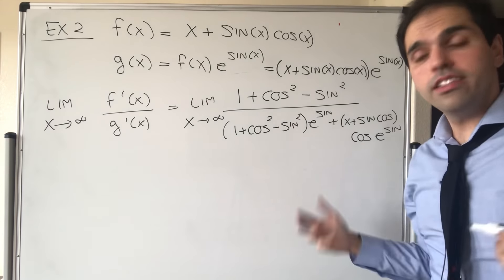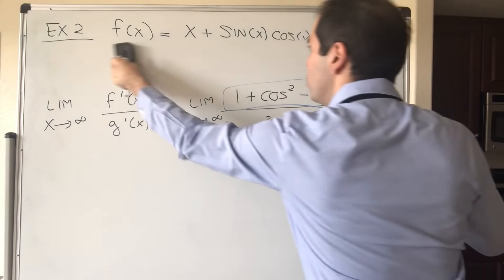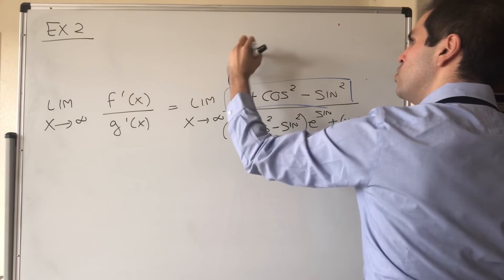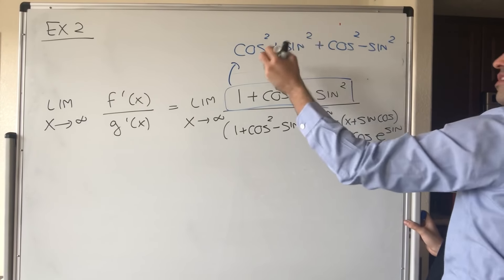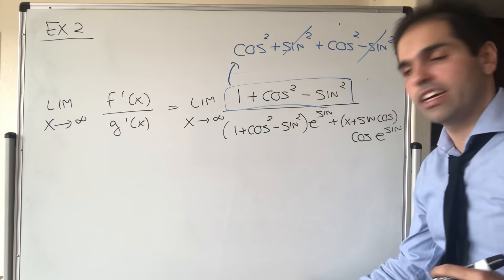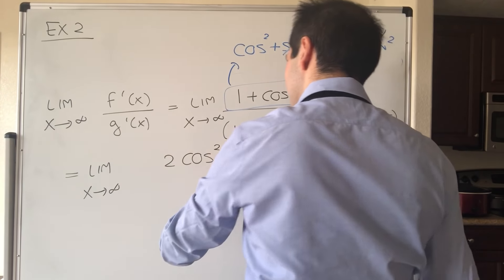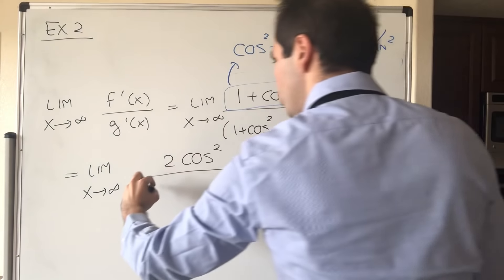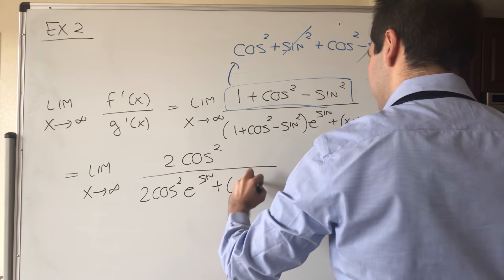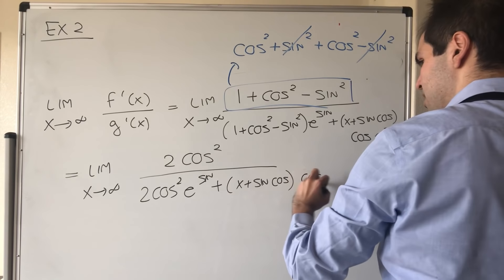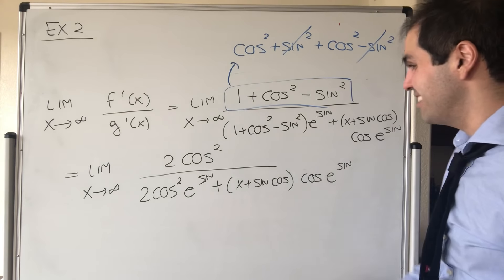We can simplify the numerator: 1 + cos²(x) − sin²(x) = cos²(x) + sin²(x) + cos²(x) − sin²(x). The sine-squared terms cancel, leaving 2cos²(x). So the expression becomes the limit as x goes to infinity of 2cos²(x) over [2cos²(x) · e^(sin(x)) + (x + sin(x)cos(x)) · cos(x) · e^(sin(x))]. I'm leaving out the x arguments here due to limited whiteboard space.